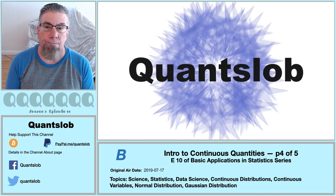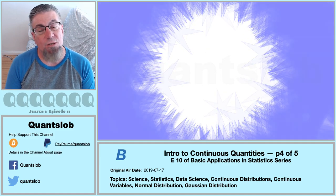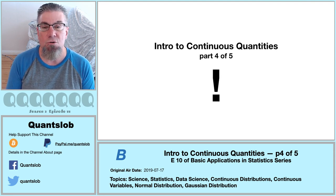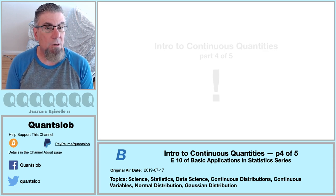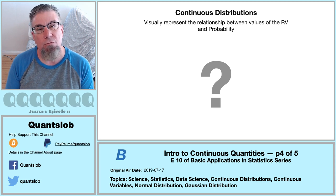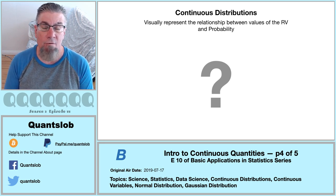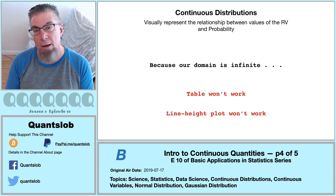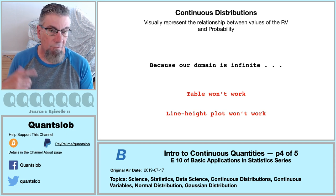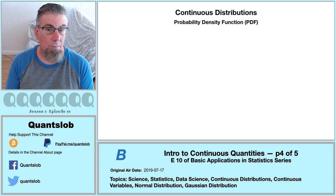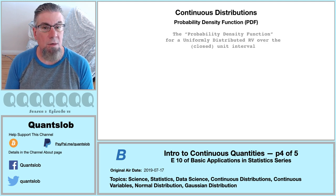Greetings and welcome to another installment of QuantSlob. This is 10 in our basic application series — part four of our mini-series on continuous quantities. In our previous edition, we left off with the question of how to visually convey the relationship between a continuous random variable and the probabilities associated with its domain, since the domain of values a continuous quantity may take is infinite. Allow me to introduce the so-called probability density function, or PDF for short. We're going to start with the uniform distribution.